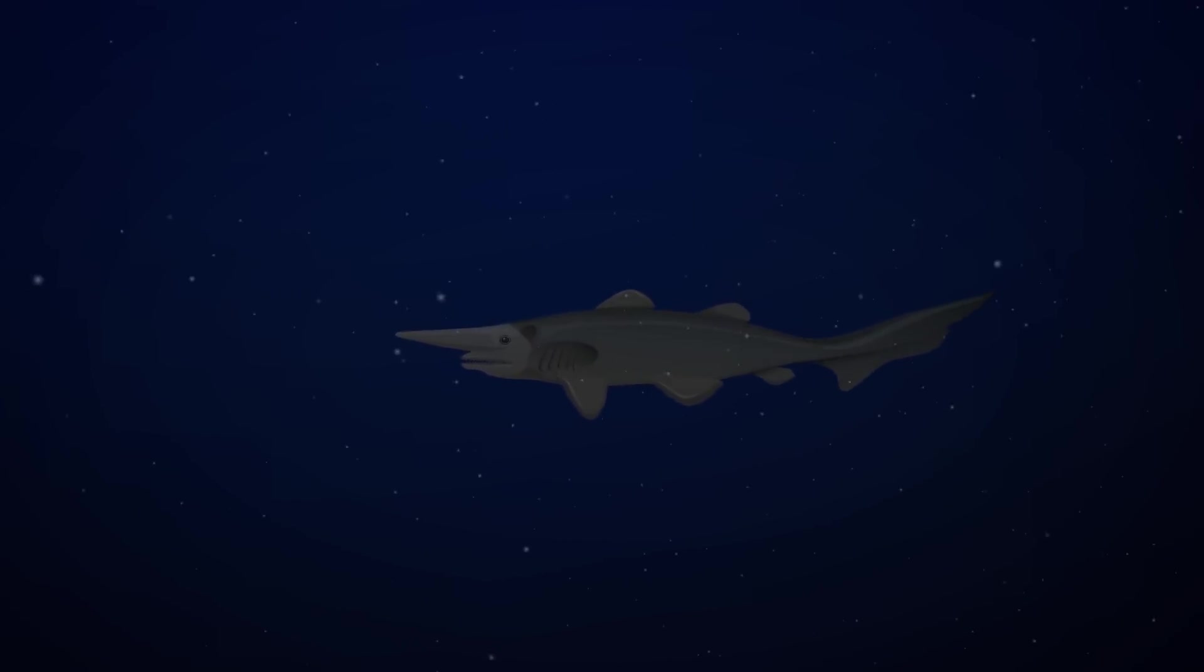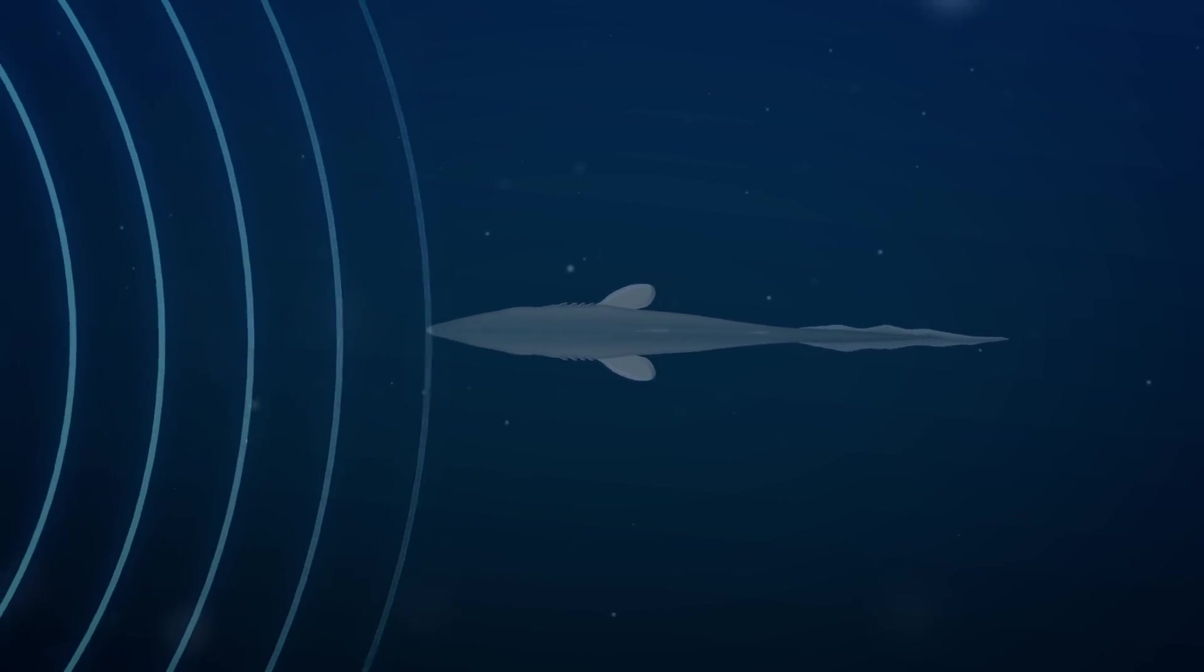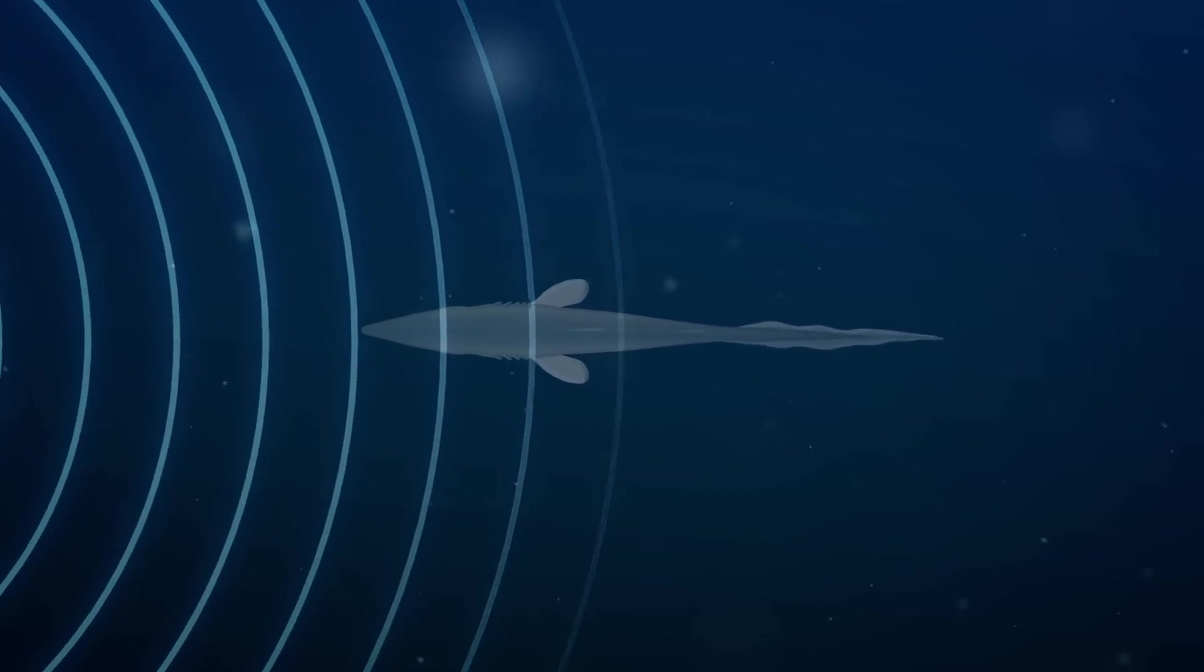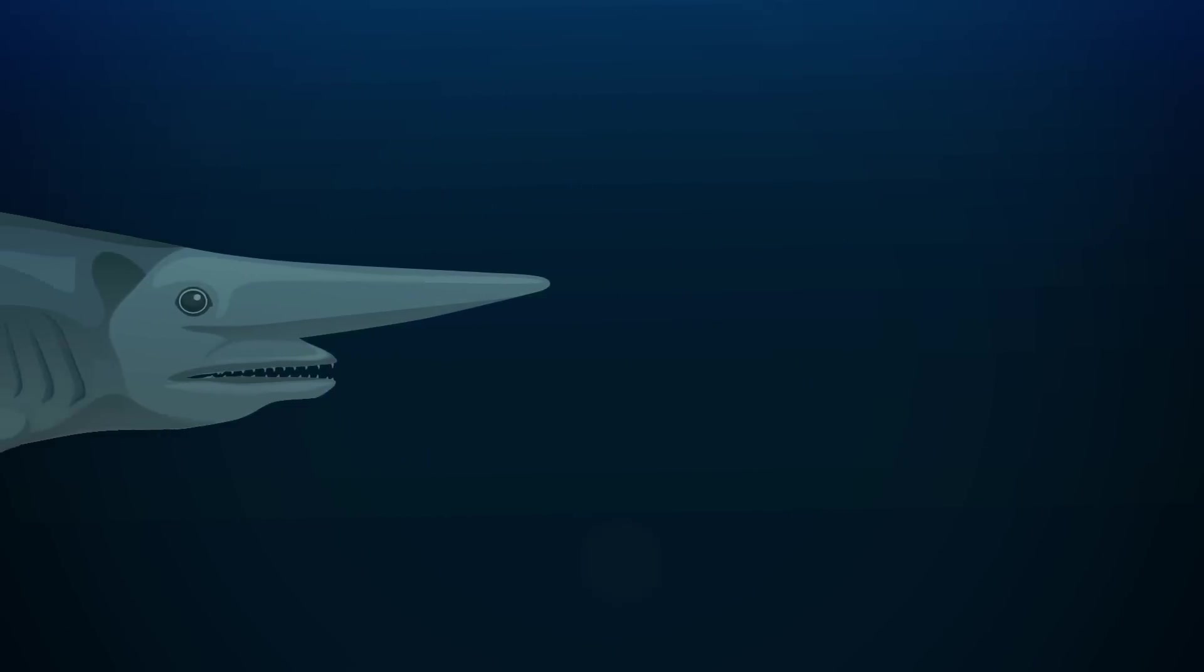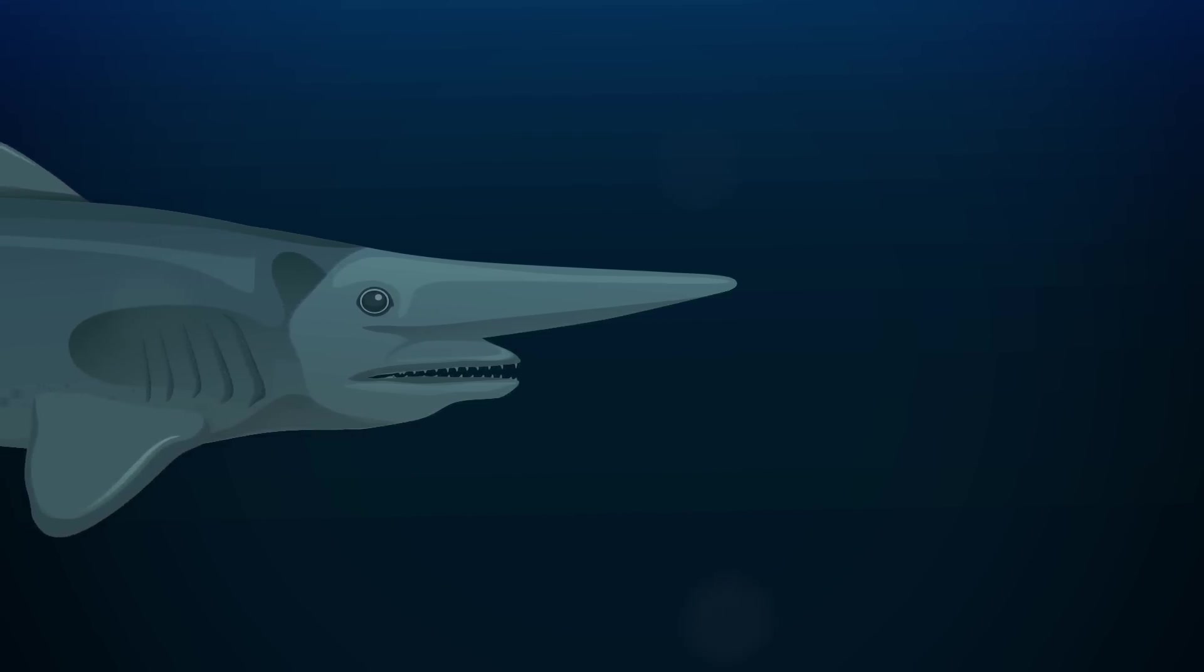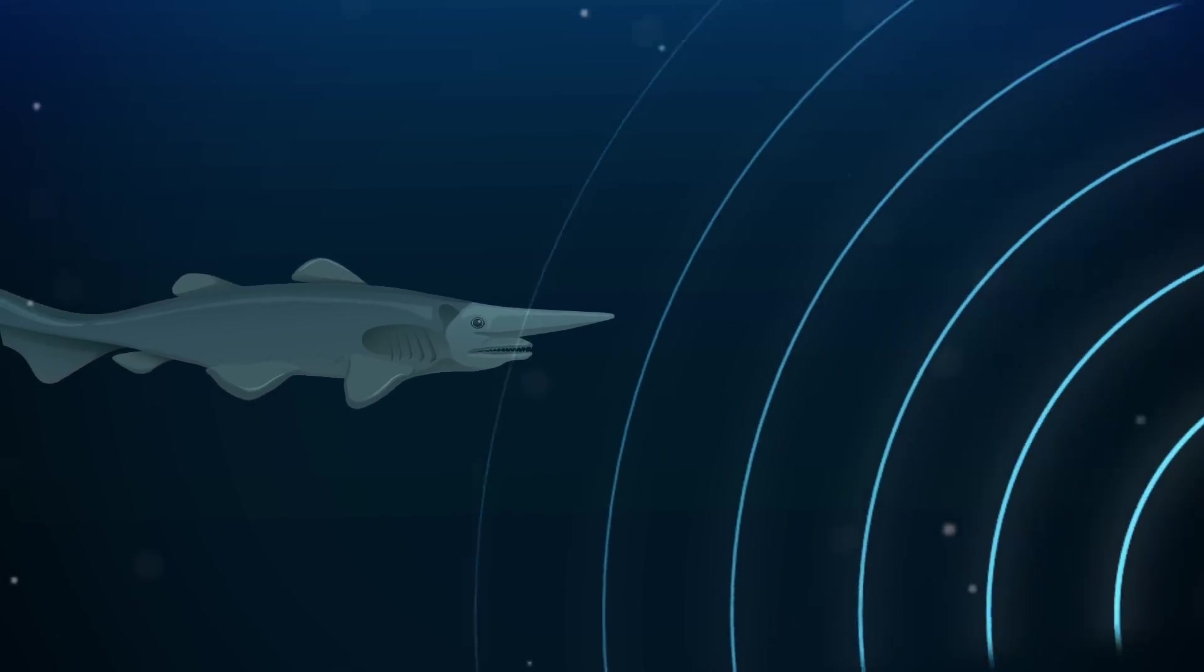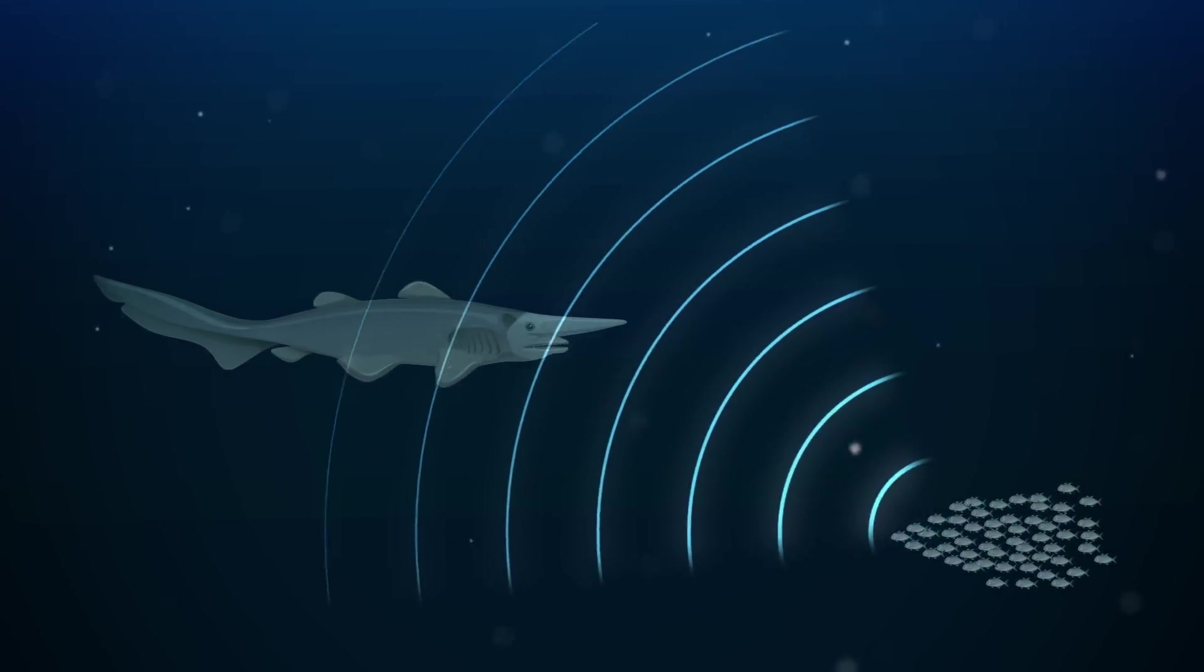Goblin sharks may have survived so long thanks to an extraordinary evolutionary adaptation. Using special electro-receptors on their snouts, goblin sharks can sense tiny changes in electrical fields, like those created by the nervous systems of living things. These electro-receptors allow goblin sharks to pinpoint camouflaged prey in the deepest, darkest waters. Not even the stealthiest animals can hide from this hunter's finely-tuned senses.